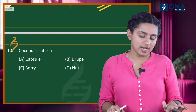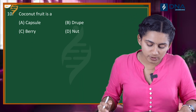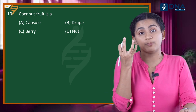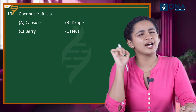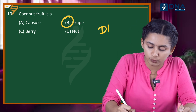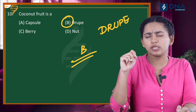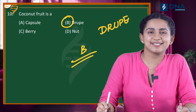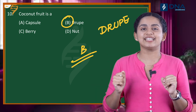This is the last question. Coconut fruit is a what? Options: capsule, drupe, berry, and nut. Coconut fruit is a drupe. So our correct option is Option B — drupe. Mango and coconut are both drupes.